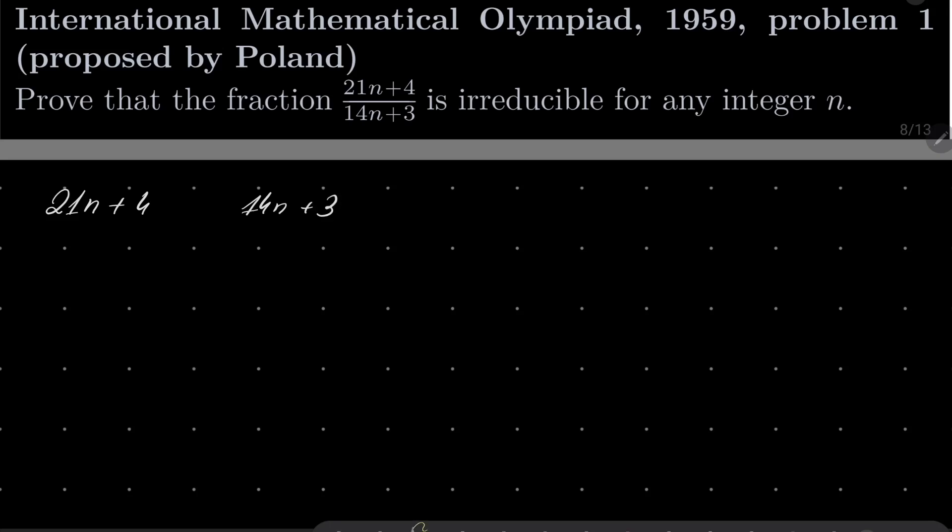if I multiply the first number by minus two, and if I multiply the second number by three, what do I have? Well,